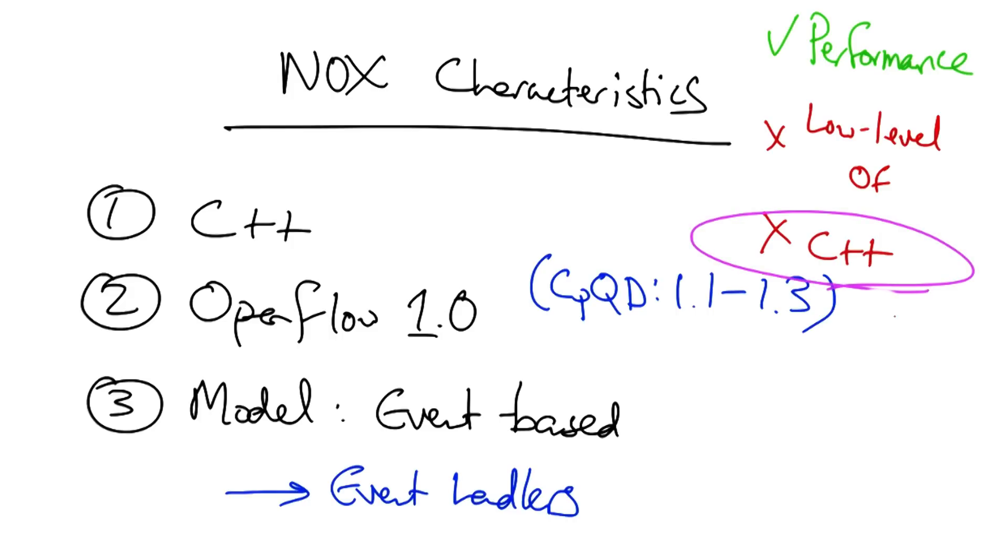To address the shortcomings associated with development in C++, POX was developed. POX is widely used, maintained, and supported. It's also easy to use and easy to read and write the control programs. Of course, as might come with implementing a controller in Python, the performance of POX is not as good as the performance of Nox.